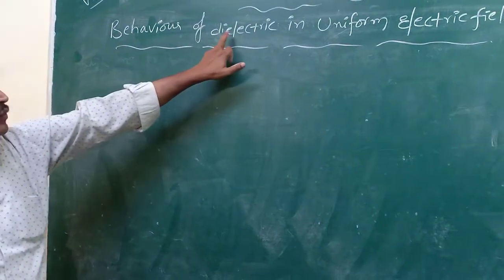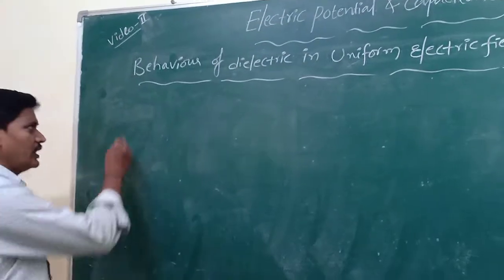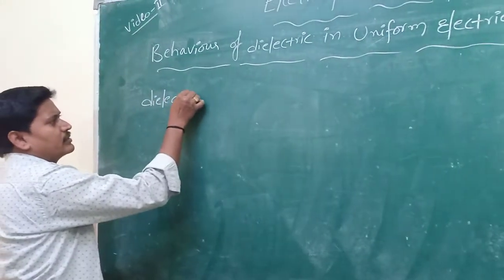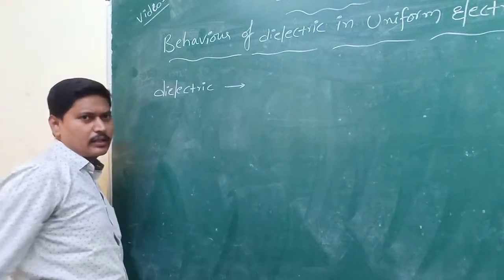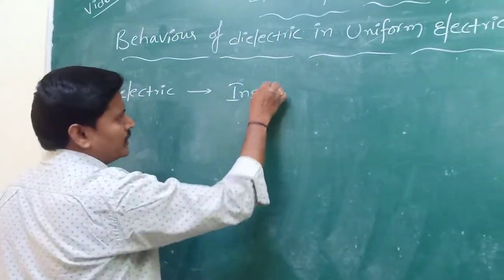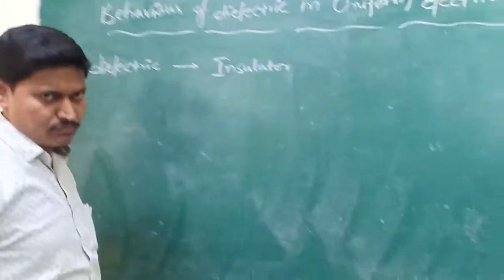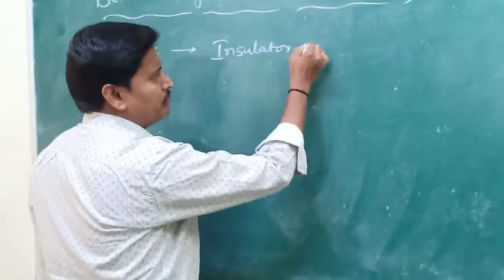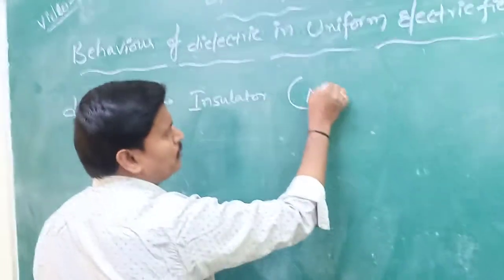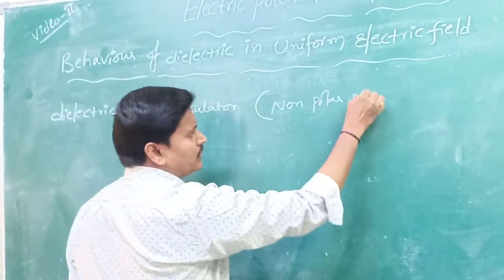First, we will discuss about what is the dielectric. Dielectric is nothing but an insulator. It is electrically neutral — no charge is present. It is also called a non-polar molecule. That means positive and negative charges both coincide at a fixed position.